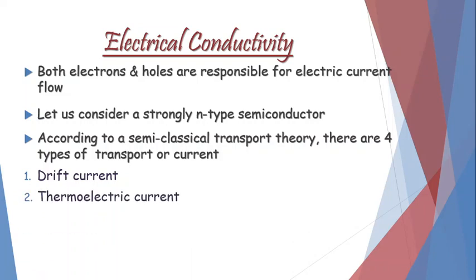The second type of current is thermoelectric current. 'Thermo' means temperature, and this type of current is caused due to temperature differences. The third type of current is diffusion current, which is caused due to variation in carrier concentration, and its direction depends on the gradient of carrier concentration.